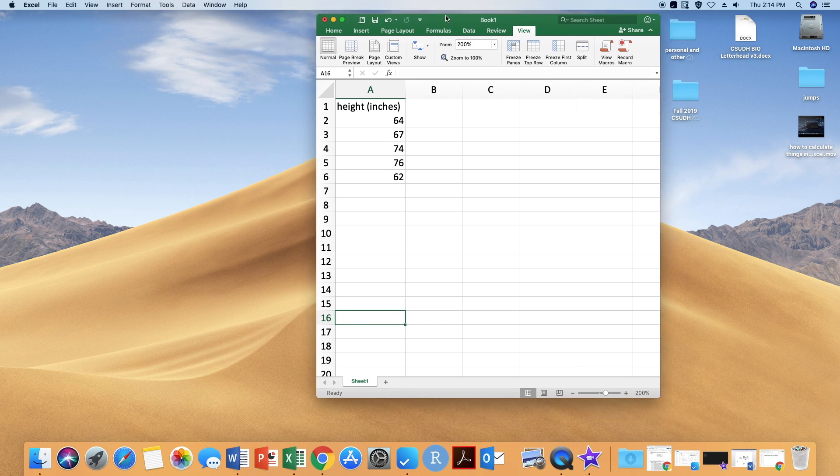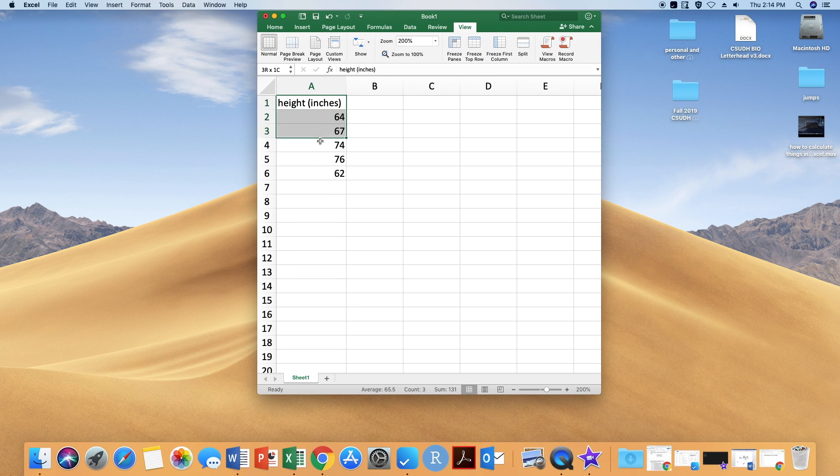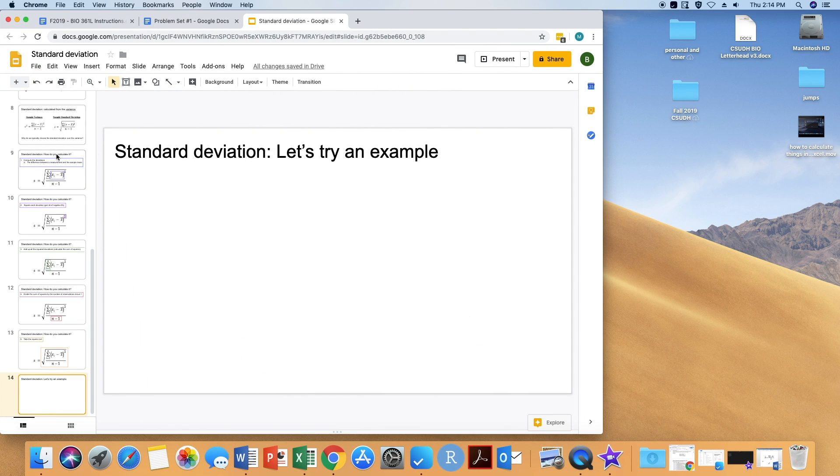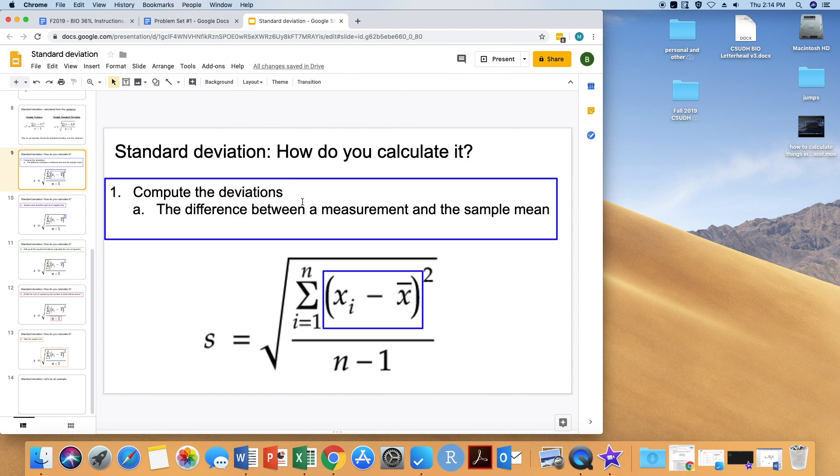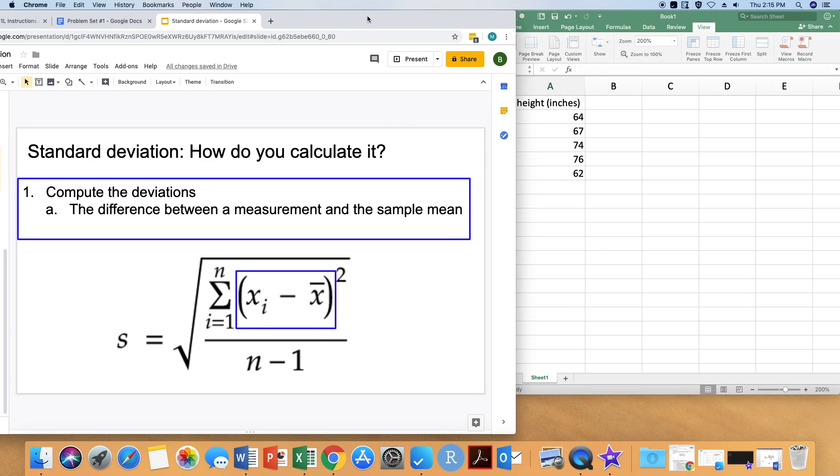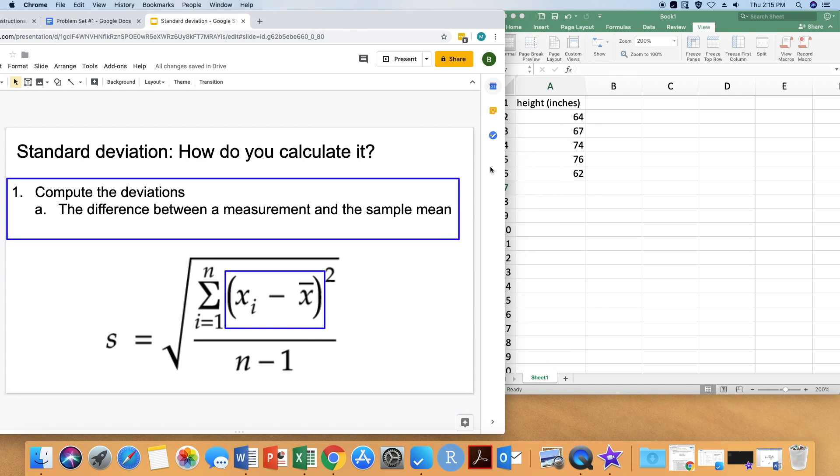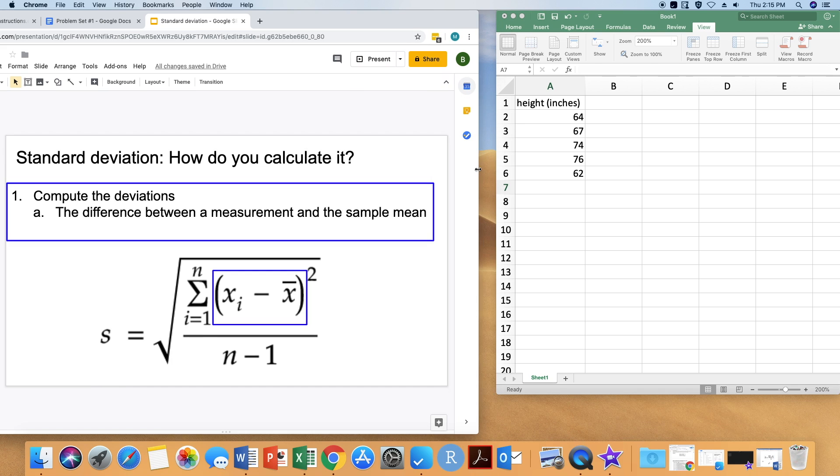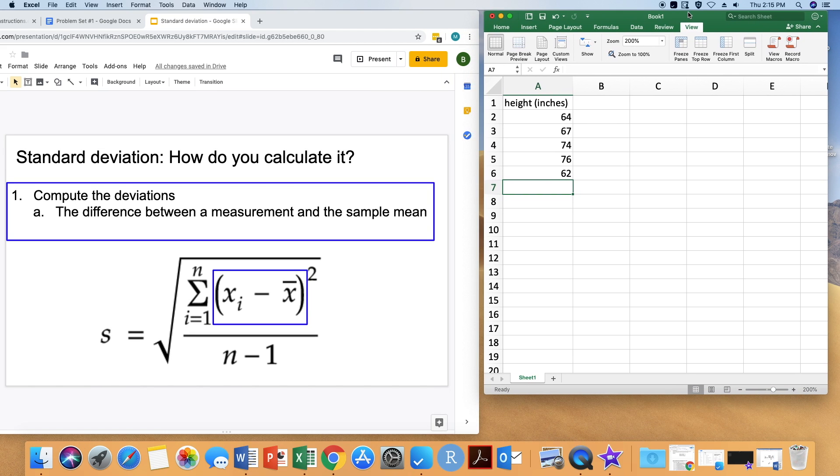So I have some data here actually about a family that I know. These are the heights in inches of five siblings. So folks that are closely related to one another but they vary in height by pretty much about a foot. So let's go here to our first step. We need to calculate the deviations. And to do that we of course need to first calculate the sample mean. So we have our five different observations here.